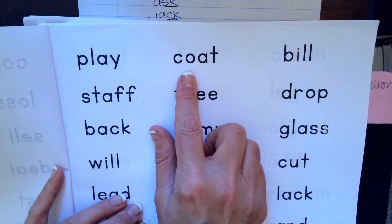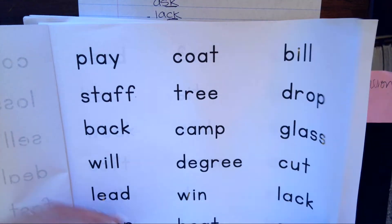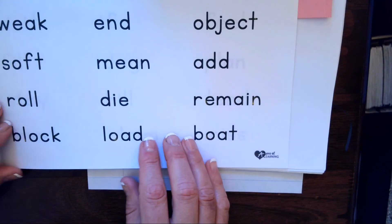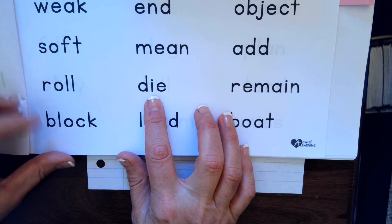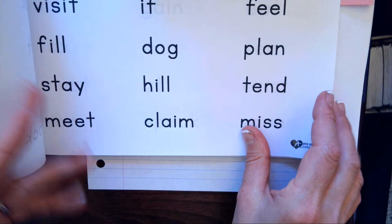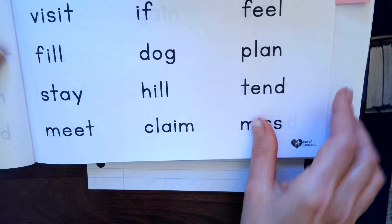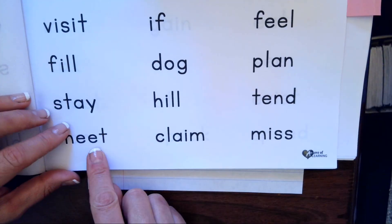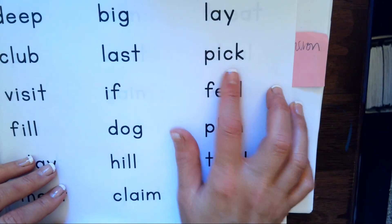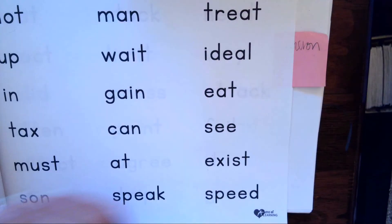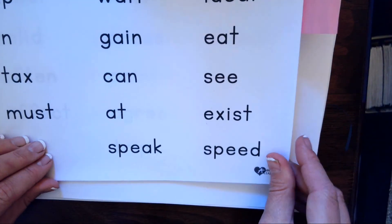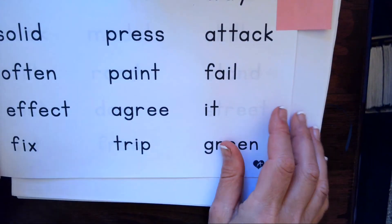O-A makes o, C-O-A-T, coat. I-E makes i, D-I-E, die. E-A makes e, M-E-A-T, meat. C-K makes k, P-I-C-K, pick. And the reason why I'm taking my time and reading it that way is because I might misread it if I don't take that first step.